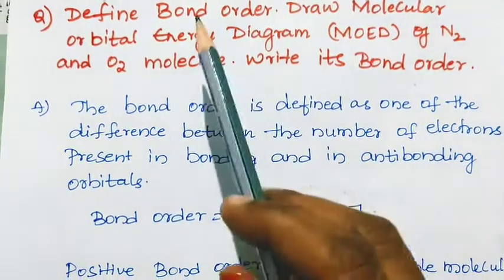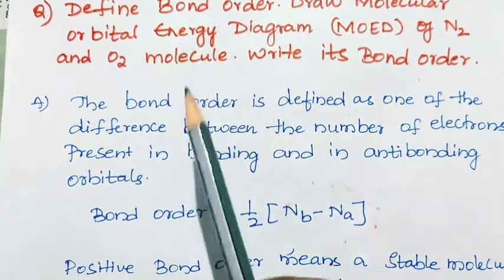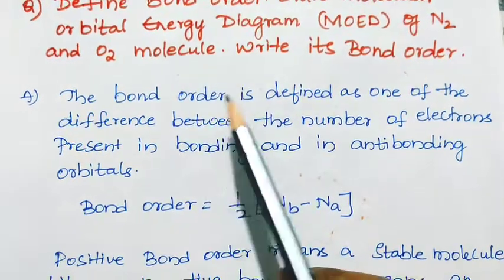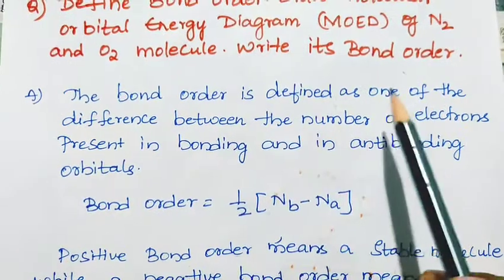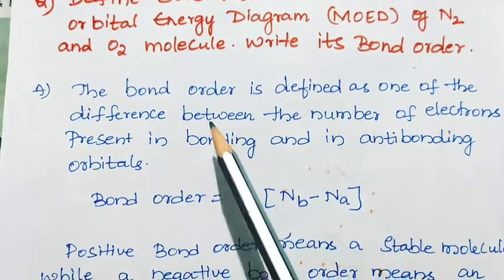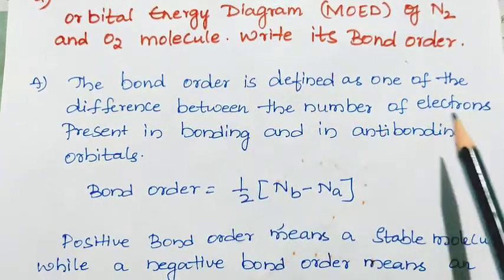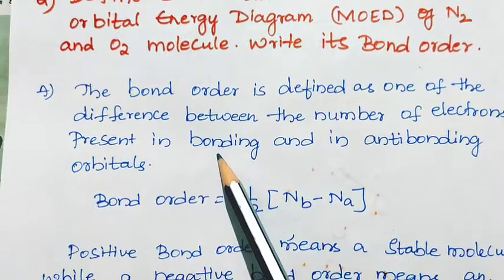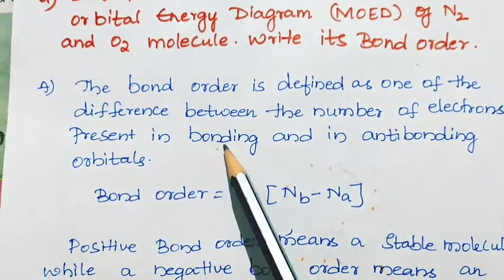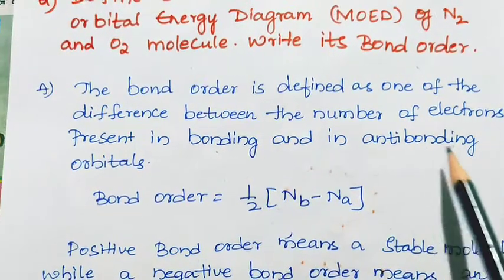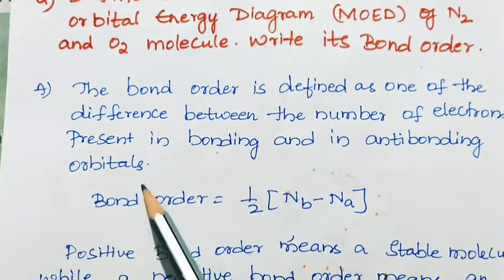First we will define what is bond order. The bond order is defined as half the difference between the number of electrons present in bonding and in anti-bonding orbitals.